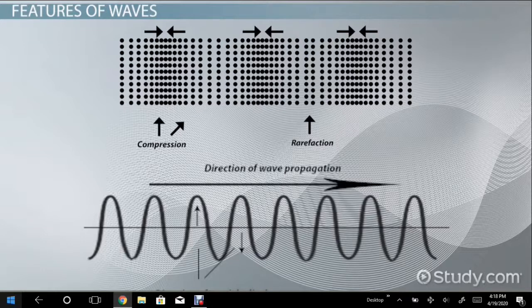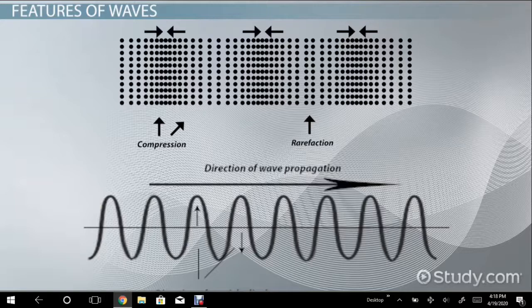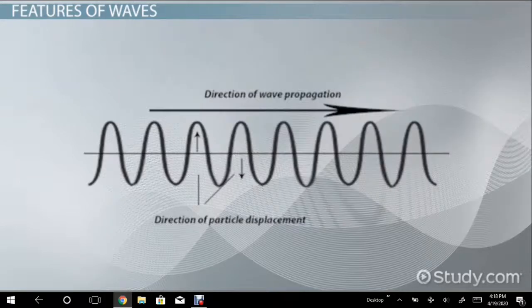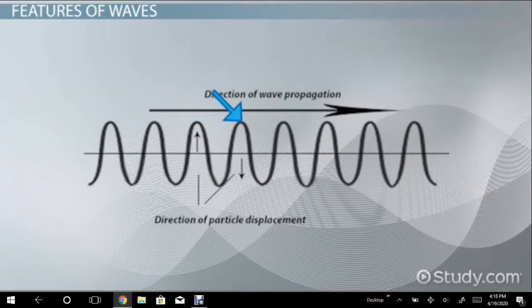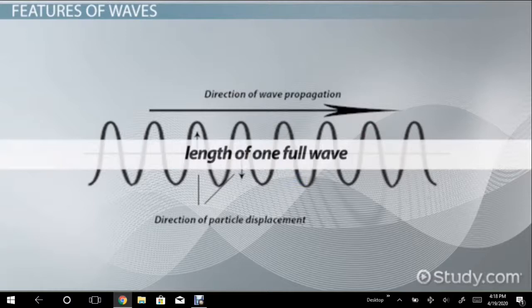We can also use this diagram to measure the so-called wavelength of the wave. This is the distance between two identical parts, from a compression, peak, to the next compression, or from a rarefaction, trough, to the next rarefaction. A wavelength is the length of one full wave in meters.